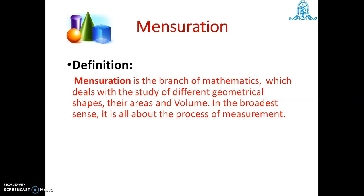Measurement of the sides — that is length, breadth, perimeter, area — of plane figures such as triangle, quadrilateral, circle, etc. When we solve examples on mensuration, there are two types of shapes.